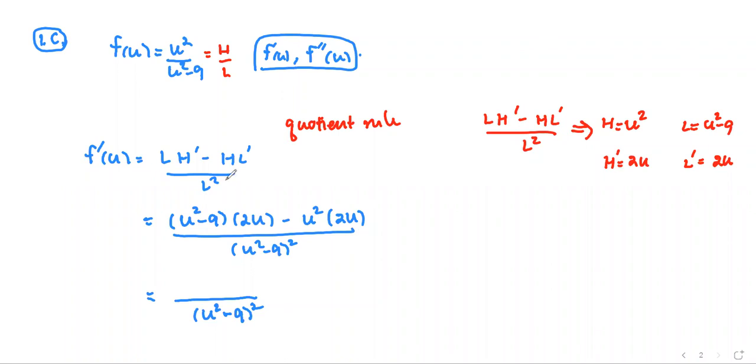I will show the class if anyone needs me to explain how to get the term negative 18u. So we have negative 18u. Everyone okay with the term negative 18u for the numerator? Can we move on to the second derivative? I'm good.